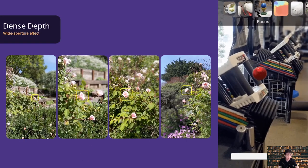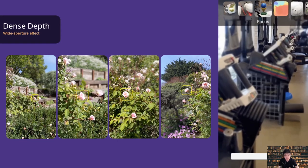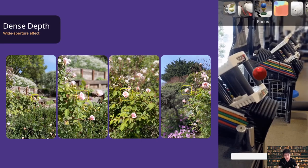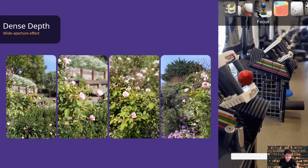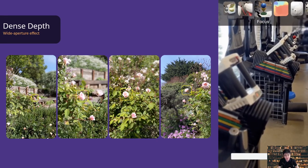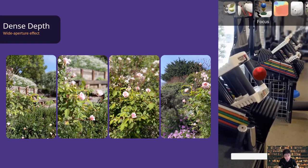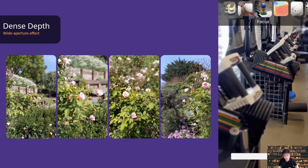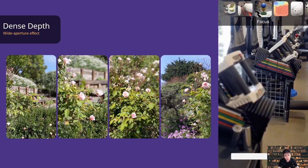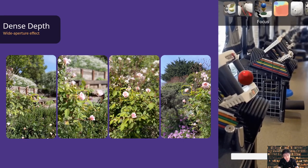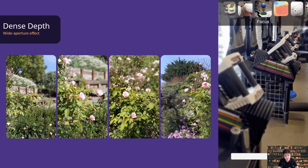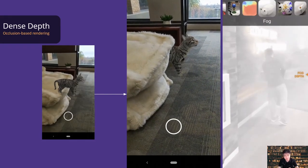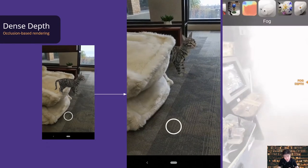DepthLab also enables a wide aperture effect that can be focused on a world-anchored point. Unlike traditional photography software, which only anchors the focal plane to a screen point, DepthLab allows users to anchor the focal plane to a physical object and keep it in focus even when the viewpoint changes. For example, with just one tap on a flower, it will automatically stay in focus no matter how close or far the user moves. Dense depth components also include occlusion-aware rendering and fog effects.